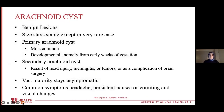Arachnoid cysts are benign lesions — meaning they are not malignant, not cancerous. The shape and size usually stays stable; it doesn't grow. It can be a primary arachnoid cyst, which is the most common type and is a developmental anomaly that happens very early in gestation. Secondary arachnoid cysts can happen as a result of head injury, meningitis, tumors, or as a complication of brain surgery.